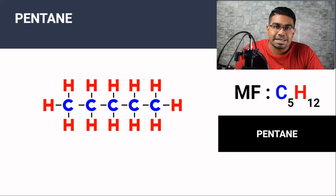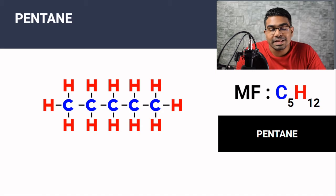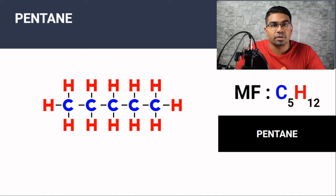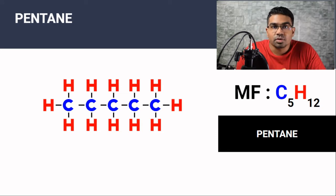Pentane is a 5-carbon alkane. The general formula for alkanes is CₙH₂ₙ₊₂. If you're not sure what I'm talking about, watch the introduction video first and it will help to make sense.